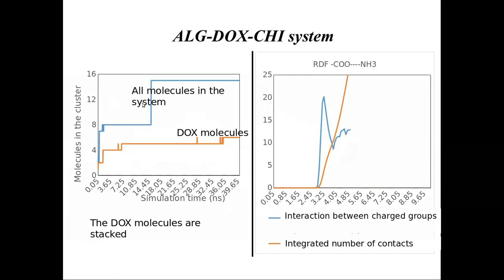Analysis of the stack size shows that after about 15 nanoseconds of simulation we have a stable stack of all molecules. The doxorubicin stack grows from two molecules at the start, increases to four, stays stable at five, and with some fluctuation reaches six, confirming that doxorubicin molecules stack together and are surrounded by the biopolymers. For the charged groups, we observe a much larger number of close contacts between the positively charged protonated amino groups and the carboxylic groups from both alginates and doxorubicin, as well as chitosan.